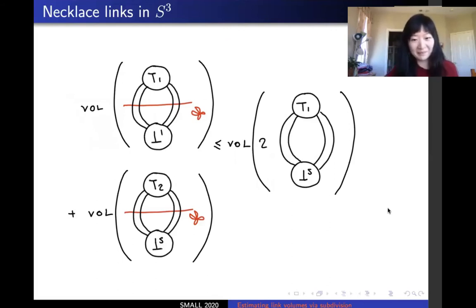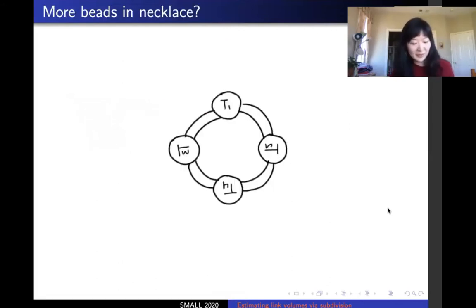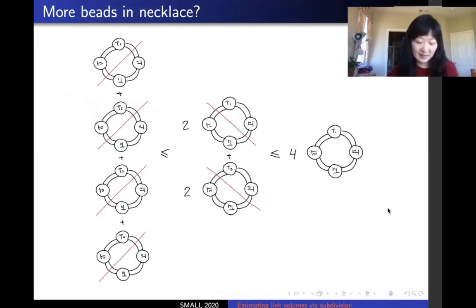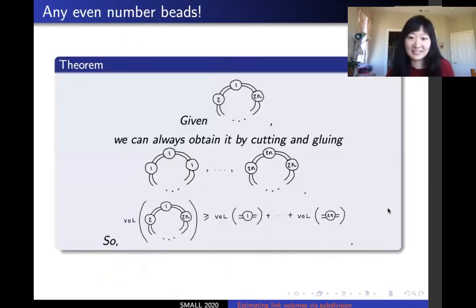Now can we do this with a longer necklace with more beads in it? It turns out that yes, we can do it. Here's the example with four beads. And in fact, we show that we can do this with any even number of beads in a necklace. Our theorem states that given a necklace link with 2N beads, we can always obtain it by cutting open and gluing back up 2N necklaces, each with 2N copies of the same bead in it. This implies that the volume of the necklace link is bounded below by the sum of the volume of its constituent beads.